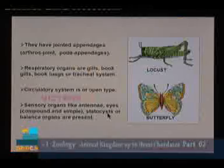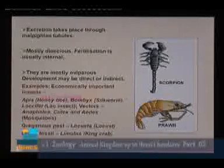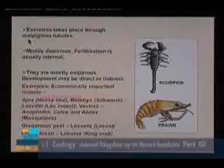Arthropods are dioecious; fertilization is usually internal; they are mostly oviparous — eggs are laid and a new individual hatches from the egg. Development may be direct or indirect. In silverfish (Lepisma) development is direct with no larval form; in butterflies, mosquitoes and houseflies, development is indirect: egg → larva → pupa → adult.